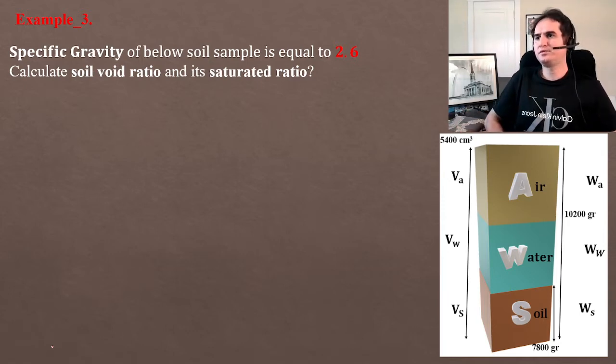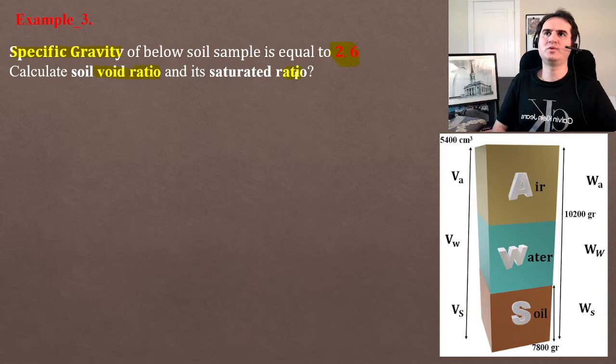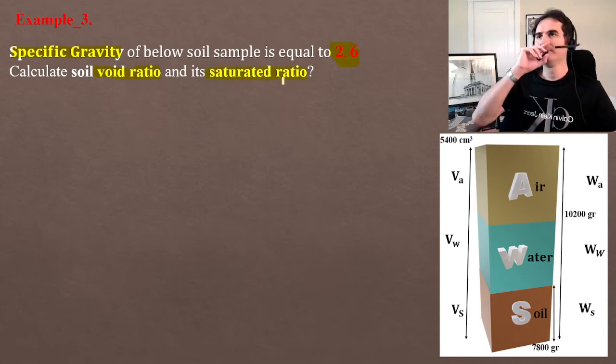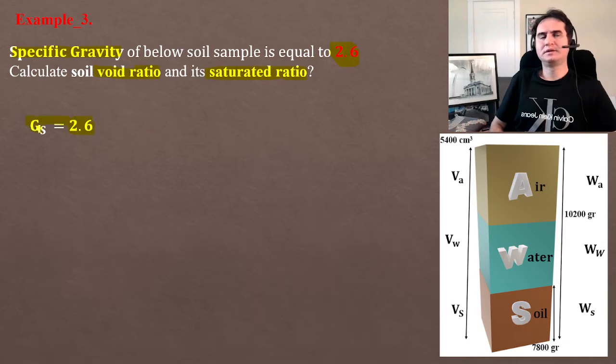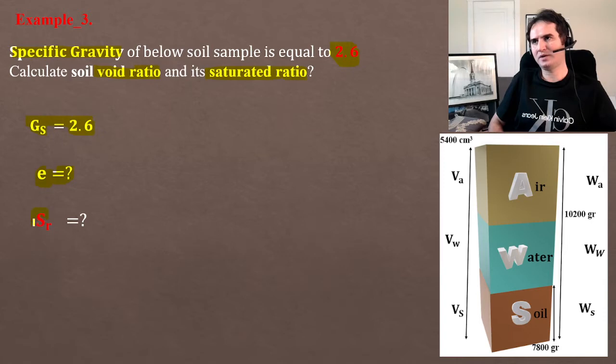In this example, a specific gravity of soil sample is provided to be 2.6. We want to calculate the soil void ratio and also saturation ratio (SR).